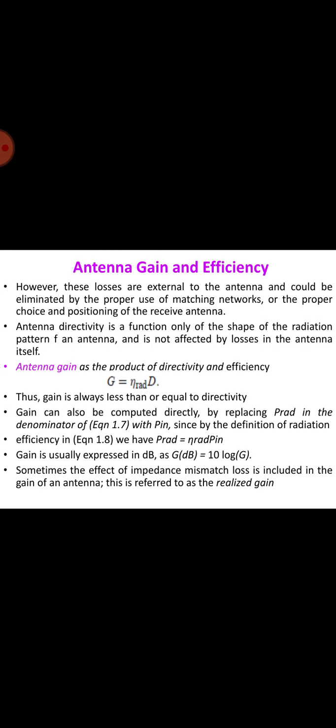Gain can be measured by comparing the maximum power density of the antenna under test with a reference antenna of known gain such as a short dipole. Thus, gain equals P max of AUT divided by P max of reference antenna into G of reference antenna.